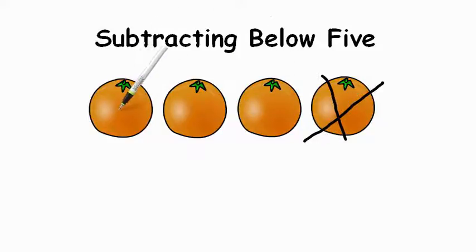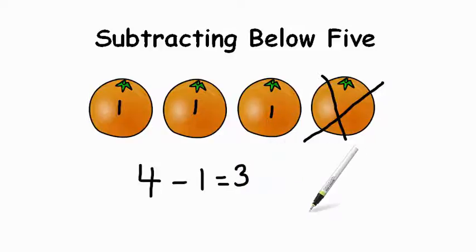Well, we have 1 here, we have another here, and another here. So we have 1, 2, 3 left. That's the same as saying we had 4 oranges to begin with, and we took away 1 orange, and then we had 3 left over.